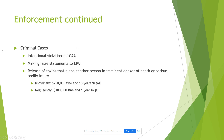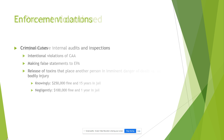And then criminal cases: the state's attorney or the US attorney, if they believe there are intentional violations of the Clean Air Act — or the source has defrauded the EPA, made false statements, doctored their results or testing, or knowingly released toxins that put someone in imminent danger of death or serious injury — it's a $250,000 fine and 15 years in jail. If it's negligent, it's a $100,000 fine and jail. So all enforcement options are there under the Clean Air Act.